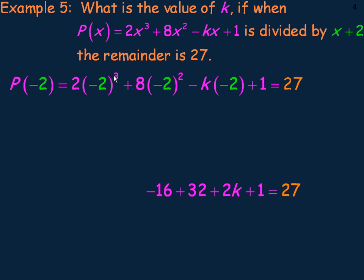We'll drop the P of negative 2, because this is our equation here to find k. Negative 2 cubed is negative 8, times 2 is negative 16. Negative 2 squared is 4, times 8 is 32. Negative k times negative 2 is 2k, plus 1 is 27. Negative 16 and 32 add to 16, plus 1 would be 17. So this is really just 2k plus 17 equals 27.